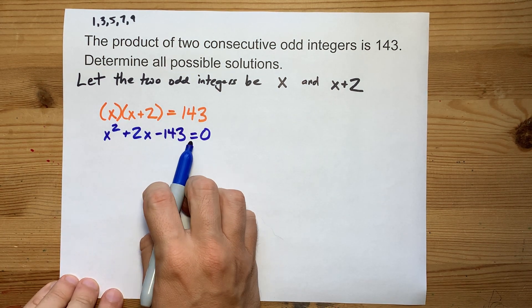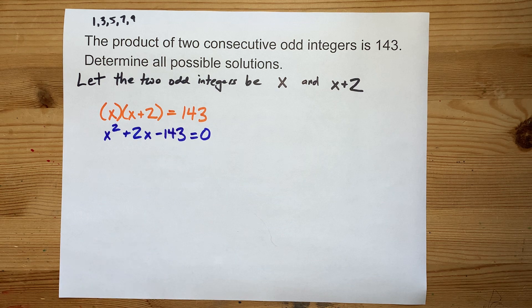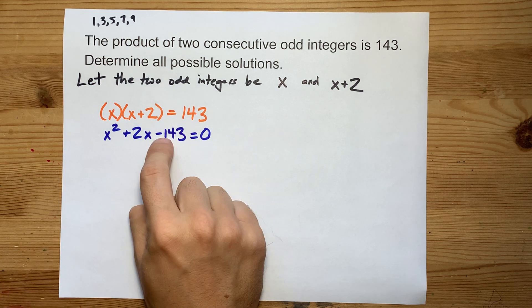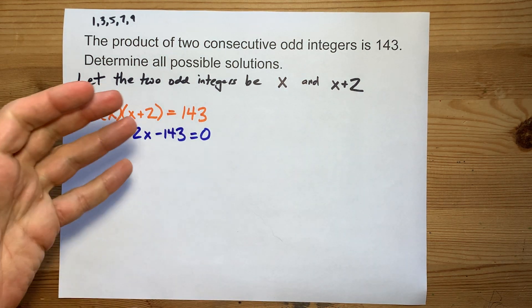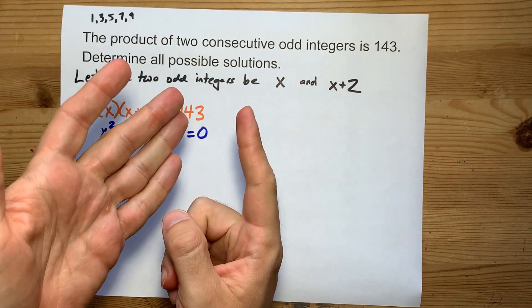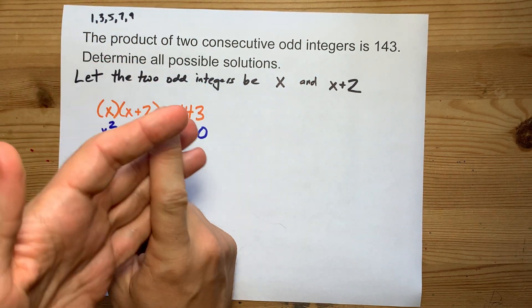I got x squared plus 2x minus 143 equals zero. Now, you can solve this by either factoring, or completing the square, if you know what that is, or quadratic formula.